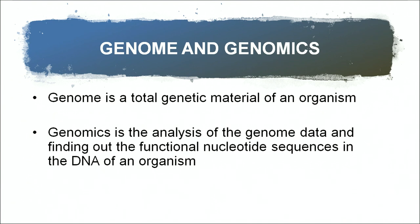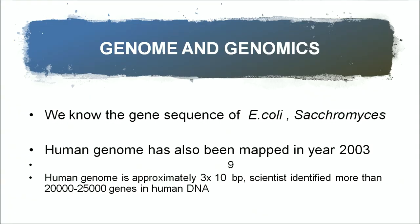What is genome and genomics? The genome is the total genetic material of an organism. Genomics is the analysis of genome data and finding out the function of nucleotide sequences in the DNA of an organism. We know the genome sequence of E. coli, Saccharomyces, and Arabidopsis, and the human genome has also been mapped. Human genome mapping was a very big project — the human genome is approximately 3 × 10⁹ base pairs, and scientists have identified more than 20,000 to 25,000 genes in human DNA.